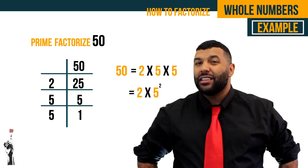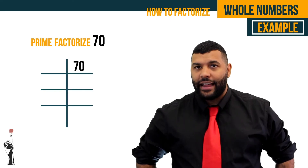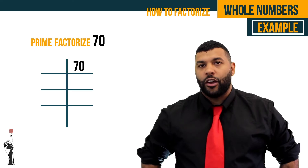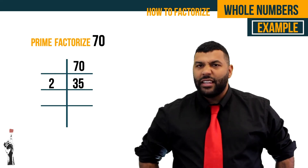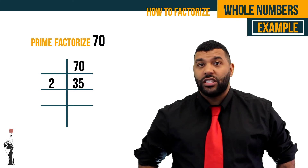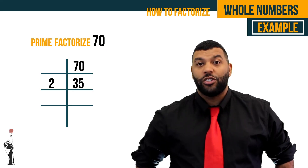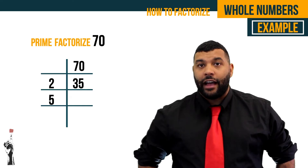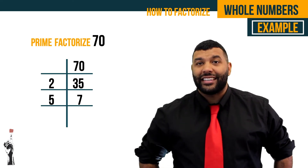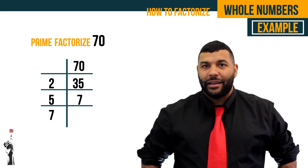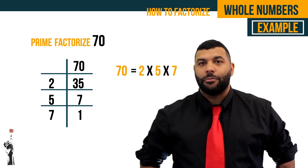Let's take a third example. Let's prime factorize 70. We take 70 and place it in the ladder. 70 divided by 2 equals 35. 35 cannot be divided by 2, so we move on to 3. 35 still cannot be divided by 3, so we move on to 5. 35 divided by 5 gives us 7. 7 cannot be divided by 5, so we move on to the next prime number, 7. 7 divided by 7 gives us 1. So 70 is broken down into 2 multiplied by 5 multiplied by 7.